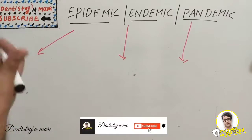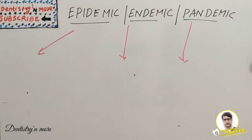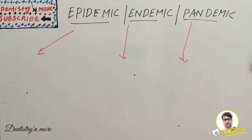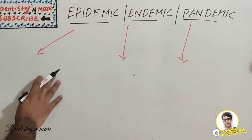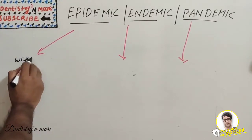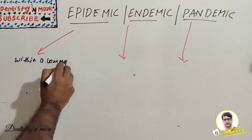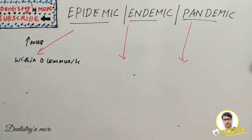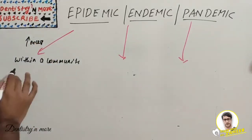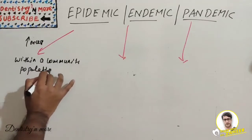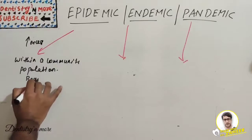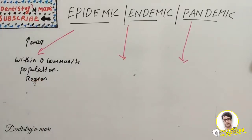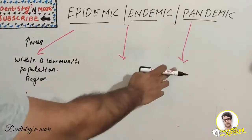First, let's start with the definitions. An epidemic is a disease that affects a large number of people within a community, population, or region — that is, an excess number of cases. That is what we call an epidemic.